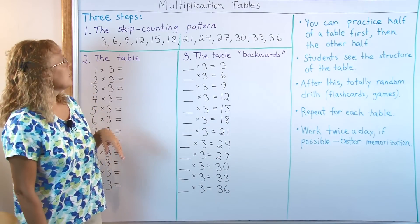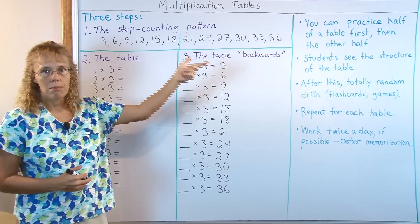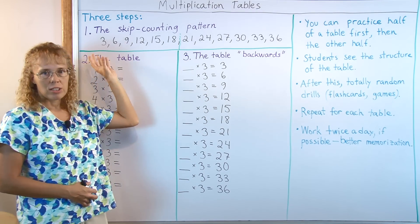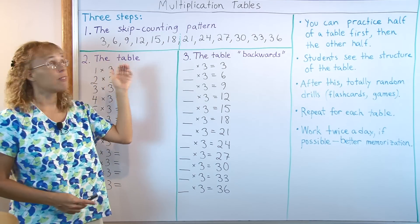So let's start. The skip counting pattern means that the student will memorize this list of numbers. For example, if they want to first start with the first half of it, this is for the table of three of course.